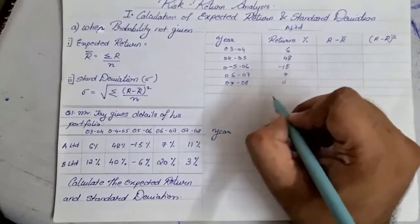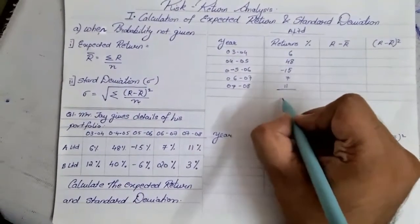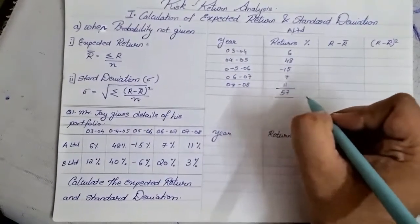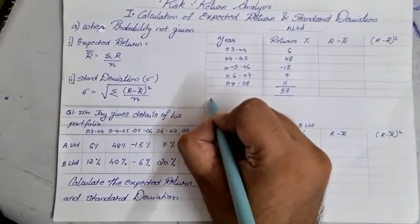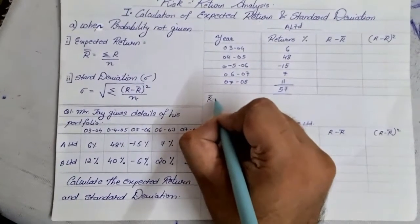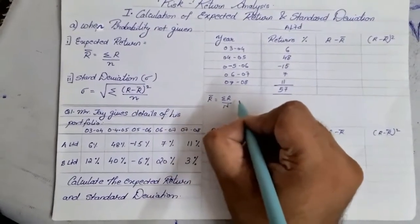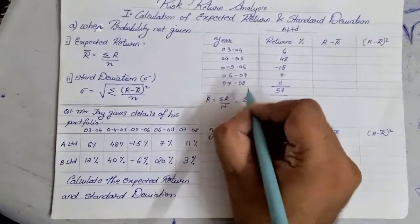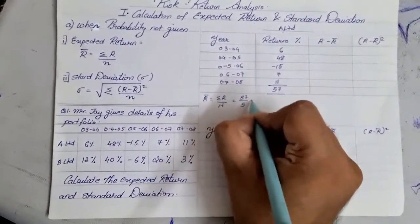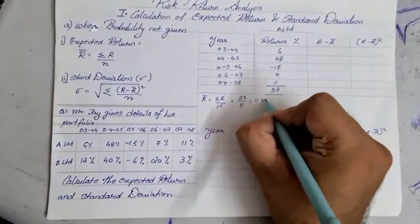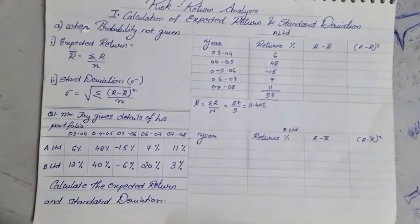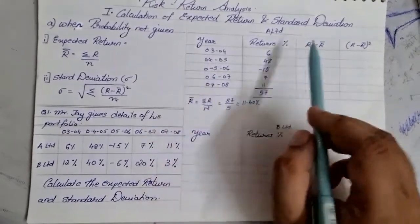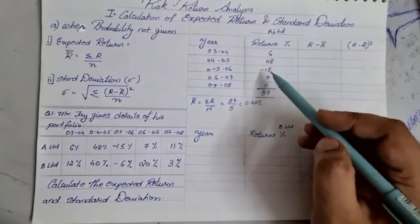The remaining returns are 7% and 11%. When you add them up and subtract the negative 15, you get a total of 57. The expected return R-bar is sigma R upon N, where the total R is 57. With N equal to 5 observations, dividing gives us an expected return of 11.40%.